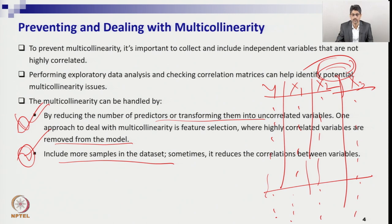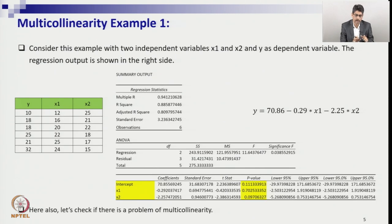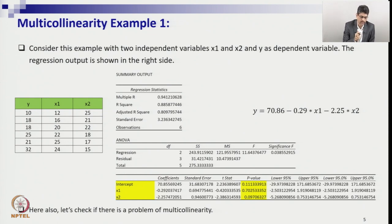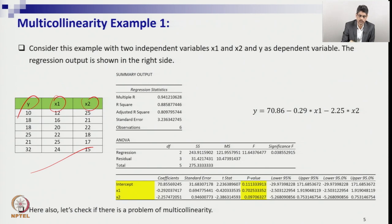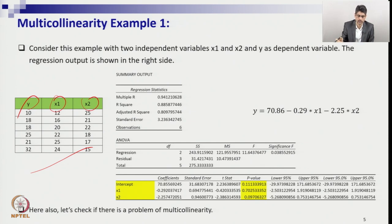However, getting more samples may not be easy — the company may have already provided the data and you need to make a decision based on that. Increasing sample size is a good approach but it is time consuming. Based on available or historical data, if you find strong multicollinearity with a very high VIF, the best option is to remove one variable.